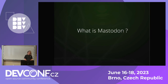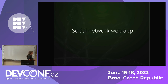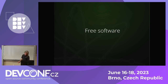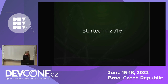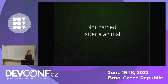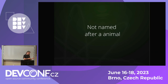What is Mastodon? Everybody would say it's a kind of elephant, which is technically right, but that's not what we're discussing today. It's a social network web application. It's free software — obviously we are at a free software conference. It started in 2016. Like a lot of free software projects, it's not named after an animal. Python is not named after the snake; it's based on Monty Python. So Mastodon is not named after the elephant, but after a US metal band.